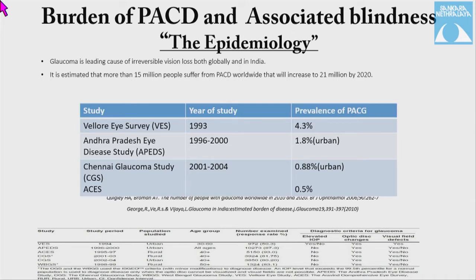There should be a standard definition to define glaucoma in a population, so that from population studies we can know the natural history and course of the disease, and determine which patients we need to treat.